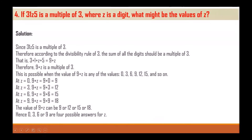Question 4: If 31z5 is a multiple of 3, where z is a digit, what might be the value of z? Since 31z5 is a multiple of 3, according to the divisibility rule of 3, the sum of all the digits should be a multiple of 3. That is 3 + 1 + z + 5 = 9 + z. Therefore 9 + z is a multiple of 3. This is possible when 9 + z is any of 0, 3, 6, 9, 12, 15, and so on.